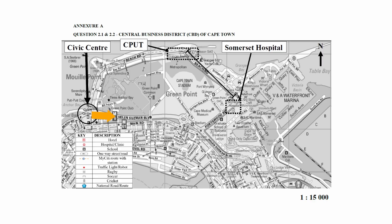Drive on Allen Sussman Boulevard in an easterly direction. Then turn into Portswood Road in a north-easterly direction. Somerset Hospital will be on the right at the corner of Portswood Road and Beach Road.